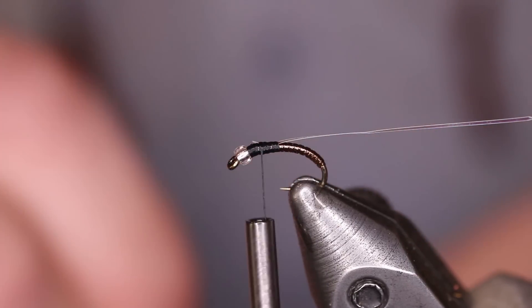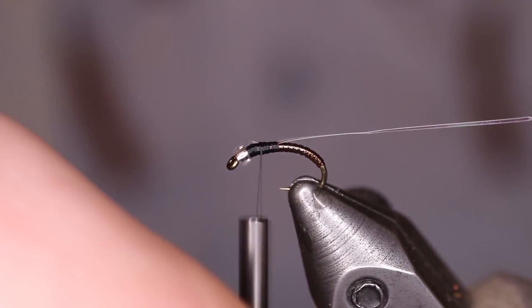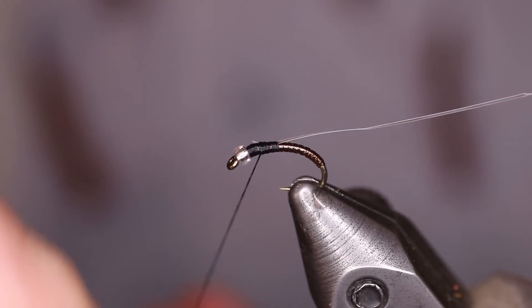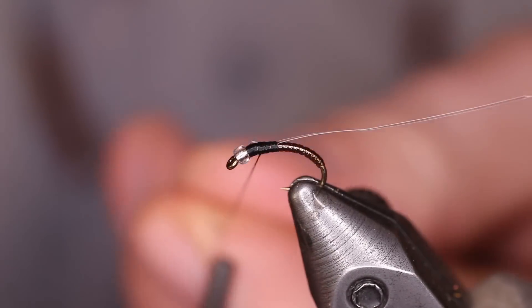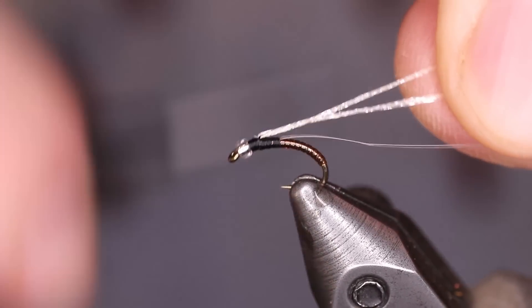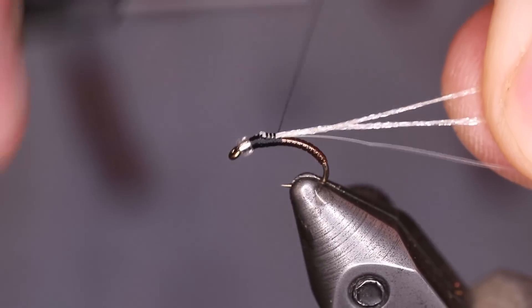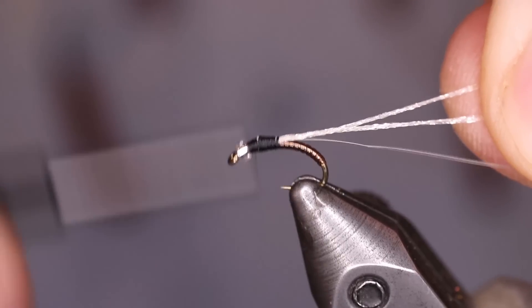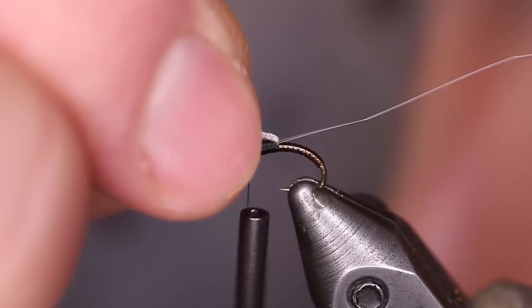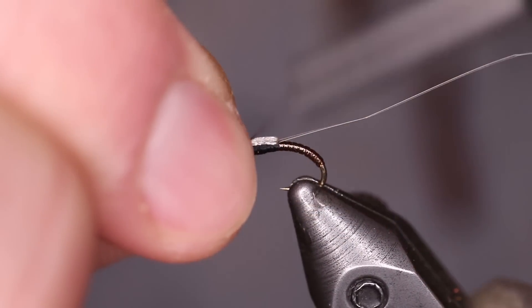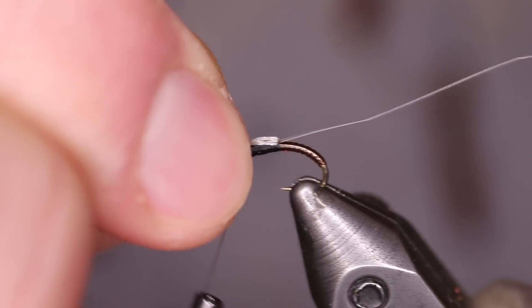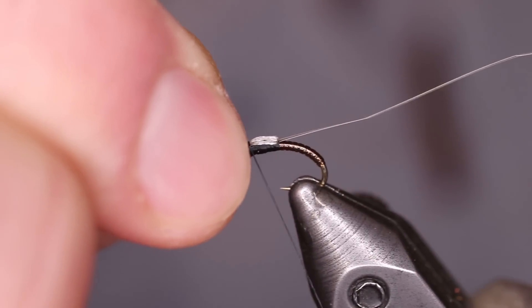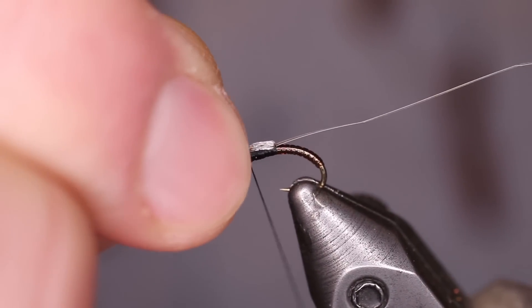Next, we're going to tie in our white floor fiber. About 10 pieces or so ought to do it. Fold that around the thread and pull it into place. Go ahead and capture that back to the point. This just helps build up our thorax a little bit and also doubles as our legs. A couple of capturing turns.